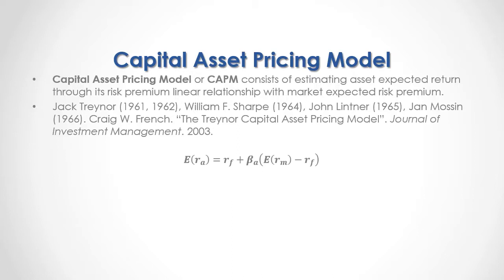As a formula, the expected asset return is equal to the risk-free rate of return plus the asset beta — which corresponds to the linear relationship between asset and market risk premium — multiplied by the expected market return minus the risk-free rate of return.